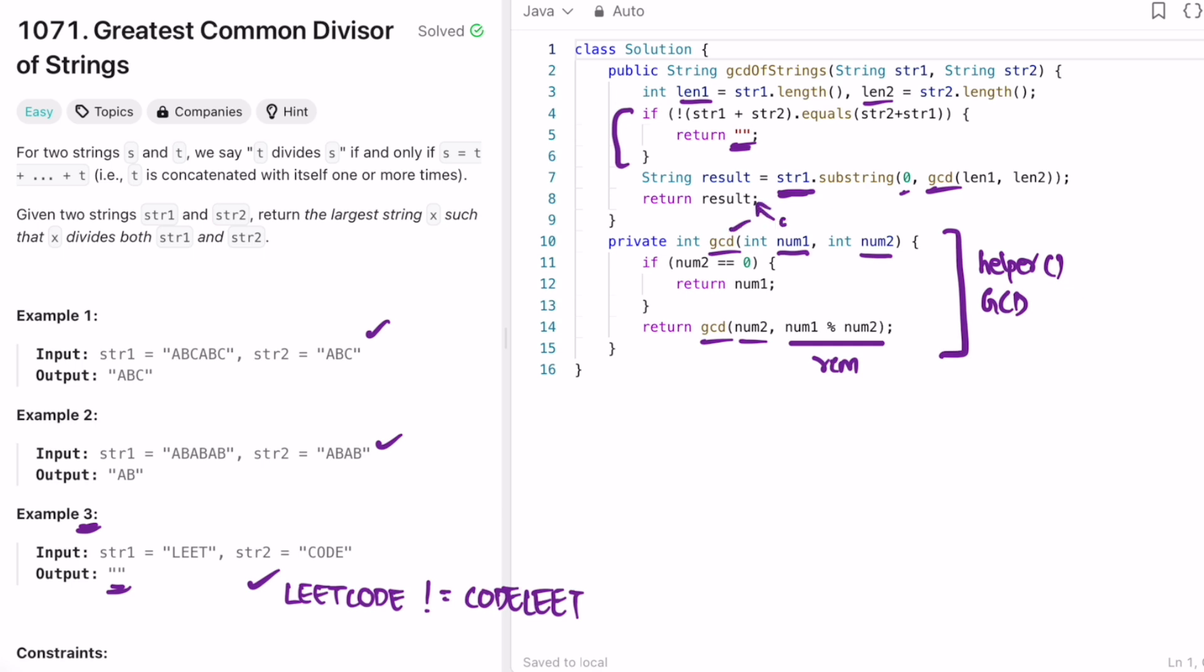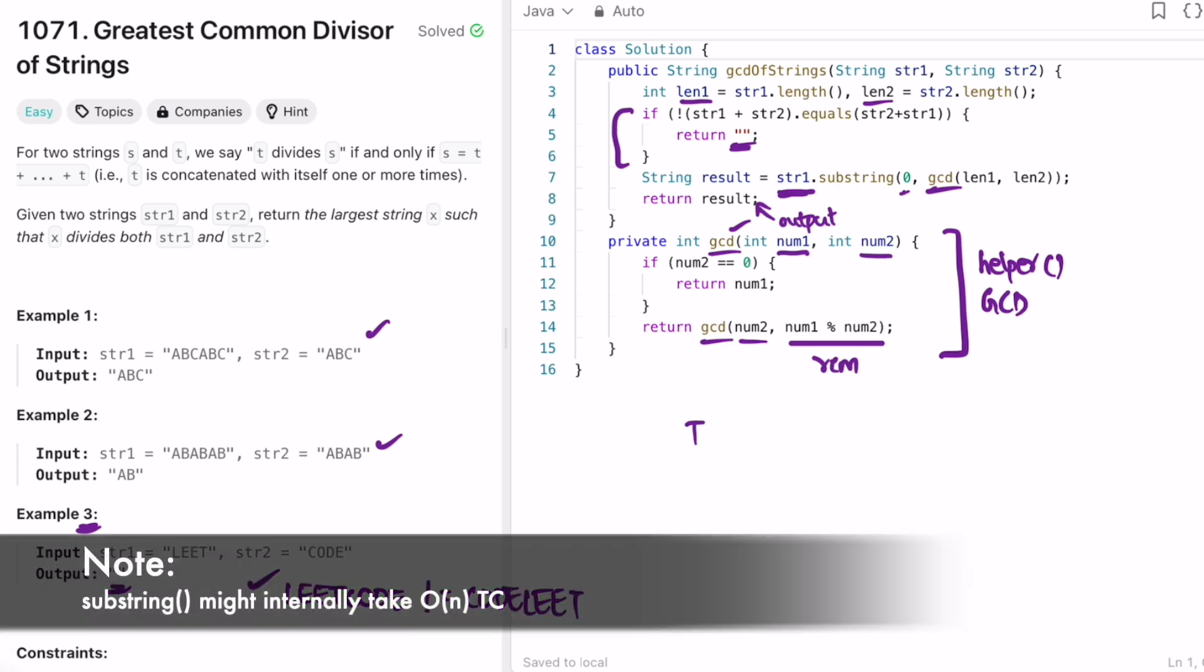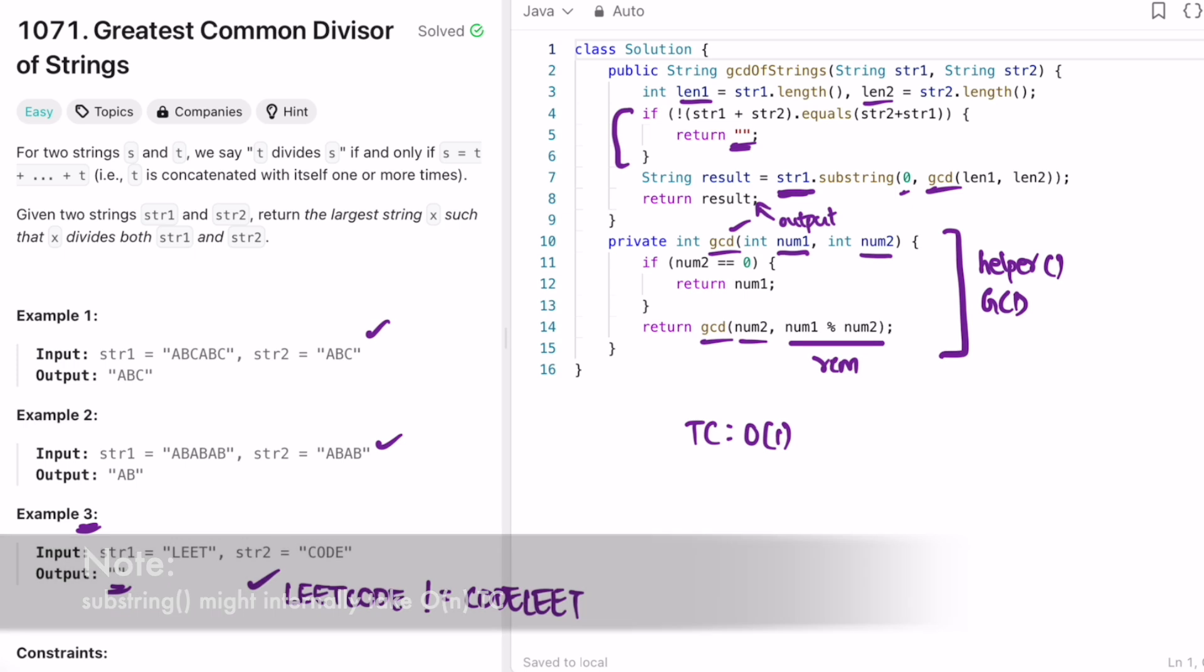And finally we are returning the output which will give you the string by forming the substring. So the time complexity of this approach is O(n) and the space complexity is also O(n). That's it guys, thank you for watching and I'll see you in the next video.